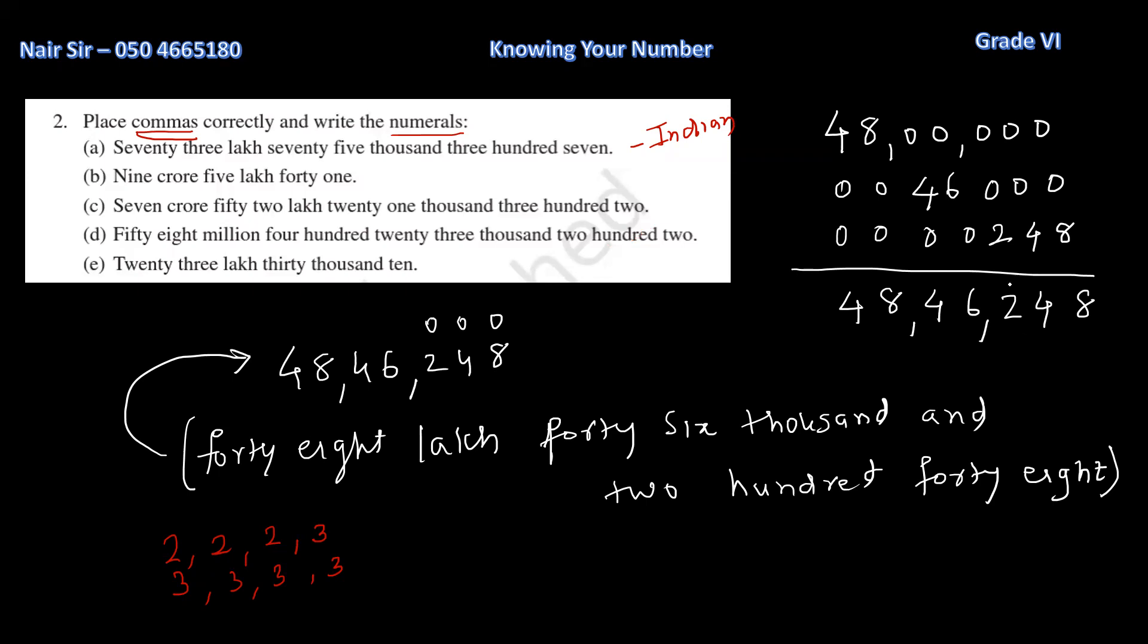And if you would have told me to write in international system, what would I have done? I would have put a comma here and a comma here. And now, what will happen? This is unit 10, 100, 1000, 10,000, 100,000, and a million. So, I would have read this as 4,846,248.